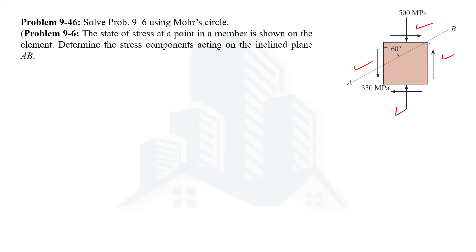Since we have been asked to determine the stress component on plane AB, we better take this plane so that we can shift that plane by an angle of 60 degrees clockwise. At this plane, we can see there is no normal stress — it means zero normal component. But a shear stress of 350 MPa is being applied and that is anti-clockwise, so we take it as negative 350. For the other face, there is a compressive normal stress acting, which is taken as negative, and to maintain balance, we have the same shear stress of 350 MPa but clockwise and positive.